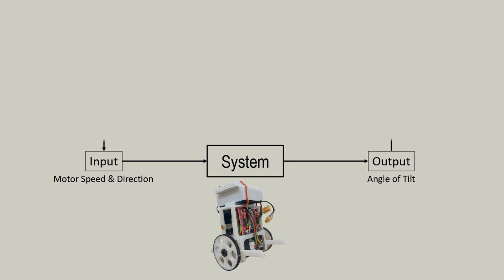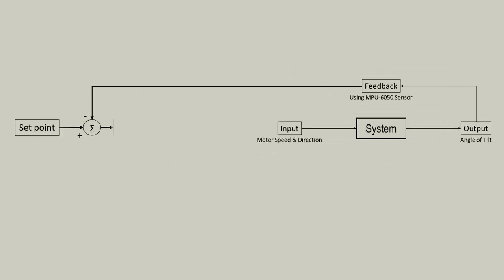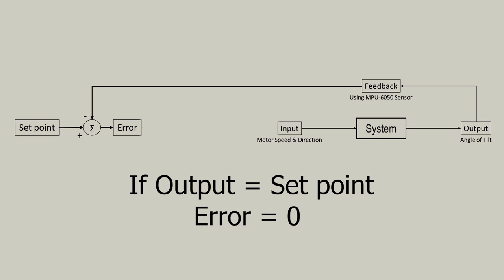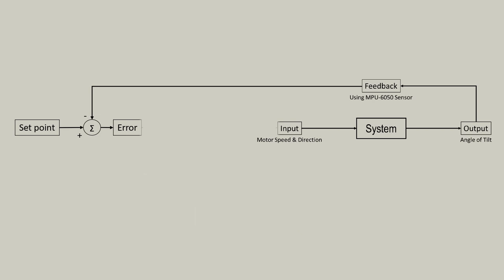In feedback control, the output of the system is fed back into the system—hence the name—and compared to the set point to see how far off the system is from where we want it to be. This difference between the two is the error term. If the output was exactly what we commanded it to be, then the error would go to zero, and that is what we want: zero error.